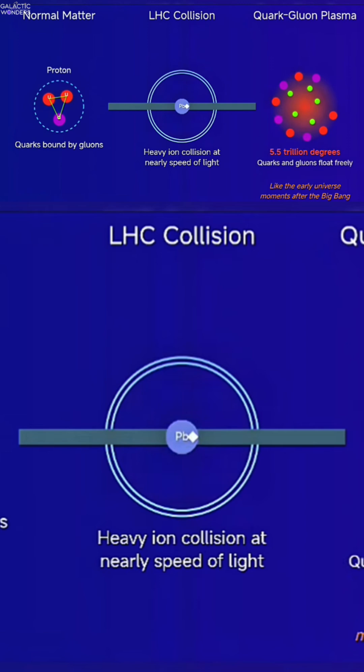But at temperatures of several trillion degrees these bonds break and quarks and gluons float freely. We've actually recreated this state at the Large Hadron Collider by smashing heavy ions together at nearly the speed of light.